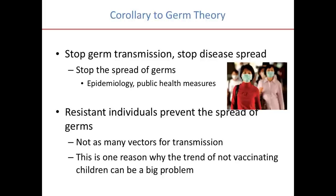If you have a population and there's a subpopulation within that group that are resistant to the disease, that actually prevents the spread of germs, because there aren't as many vectors for transmission. This is one reason why the trend of not vaccinating children can be a very large problem. If a large population of children is mostly vaccinated, there aren't a lot of vectors or hosts for the disease to grow in.